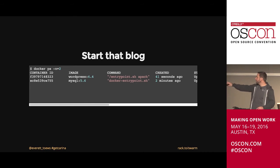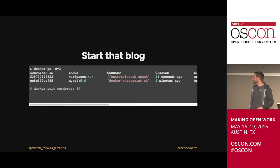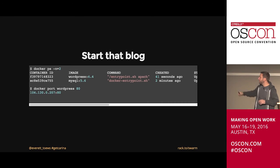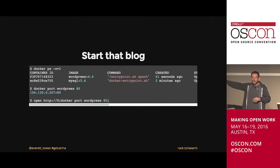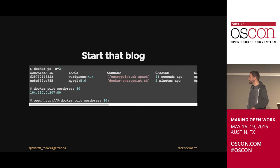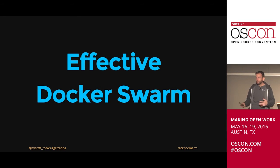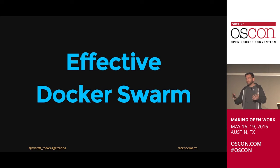We're up and running. Running 'docker port wordpress 80' gives us back the public IP address and port 80 where our WordPress instance is running. We open it up and start blogging. That was pretty easy — a few commands. You could also use Docker Compose to knit all that together and bring it up with a single command.